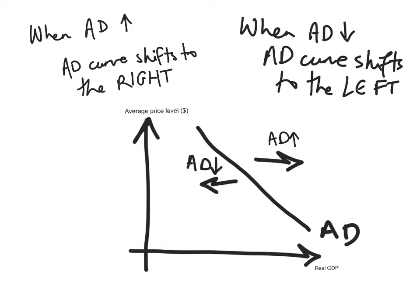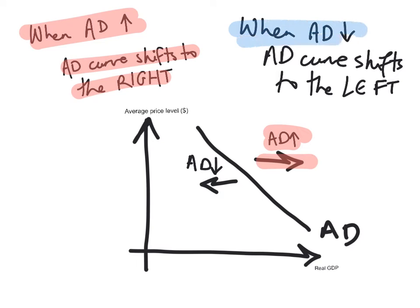When aggregate demand increases, the AD curve will shift to the right — here, when AD increases, it shifts to the right in that direction. And when aggregate demand decreases, the aggregate demand curve will shift to the left. Remember, aggregate demand is a relationship between the average price level on the y-axis and real GDP or real output on the x-axis.